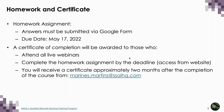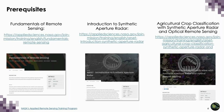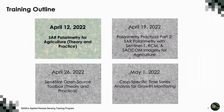You will receive a certificate approximately two months after the completion of the course from Marinas Martin. The prerequisites for this four-part training are RSET's Fundamentals of Remote Sensing Session 1, Introduction to Synthetic Aperture Radar, and Agricultural Crop Classification with Synthetic Aperture Radar and Optical Remote Sensing. This slide outlines what each part of the four-part training will cover from April 12th through May 1st. Recordings will be made available within 48 hours of the training day on the RSET website.